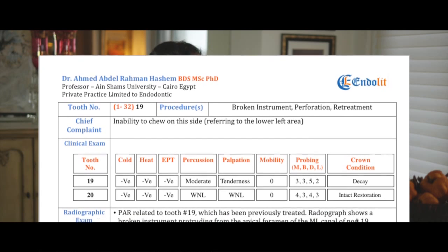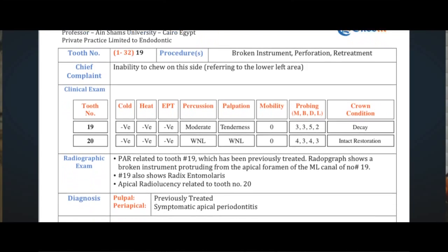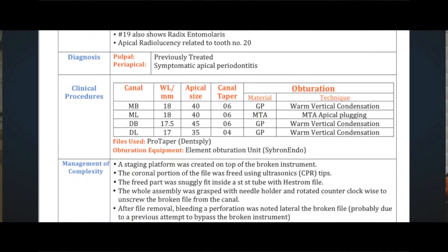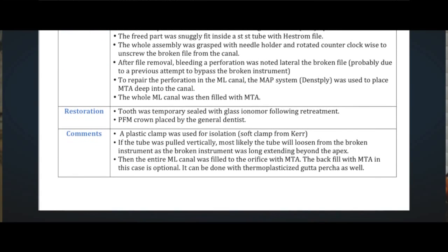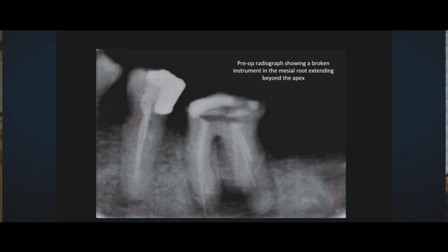I'm just going to quickly go over the background of this case as you explained to me. This was a case — teeth number 19 and 20 — that you did the testing on, and tooth number 19 had a previous root canal. You went into the tooth and found a big broken instrument in one of the mesial canals, specifically in the mesolingual canal. Then you went about removing it in a very interesting way. Can you briefly explain how you went about removing that broken instrument?